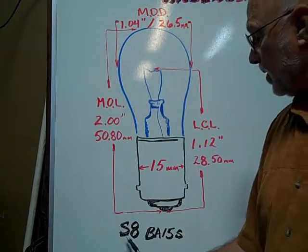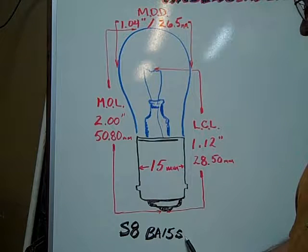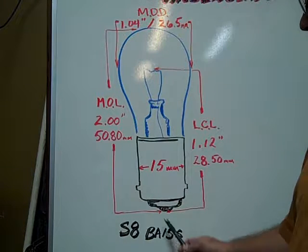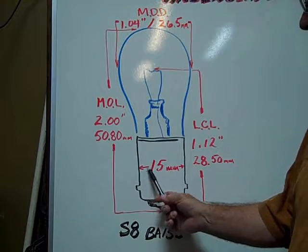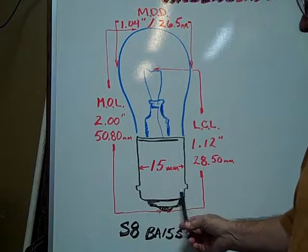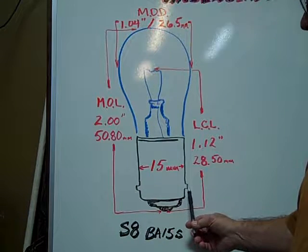The S8 BA-15S. S signifies single contact. The 15 signifies 15mm diameter of the base. The pins are directly across from each other on the base.